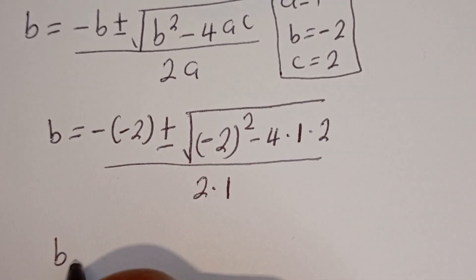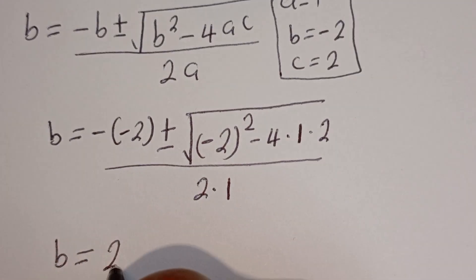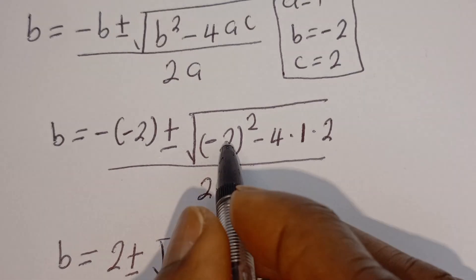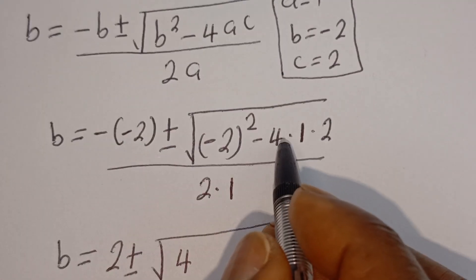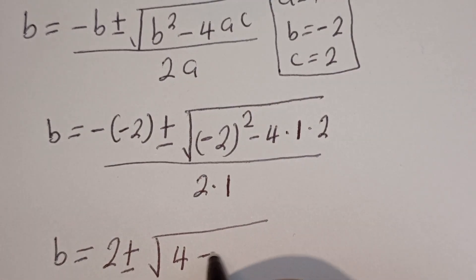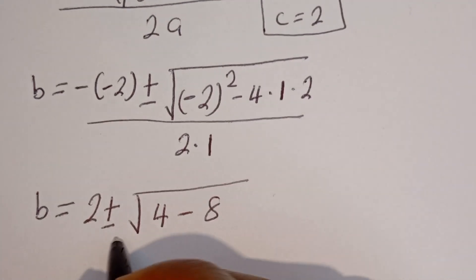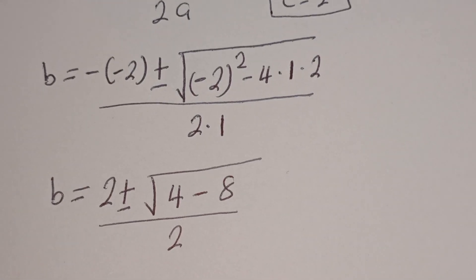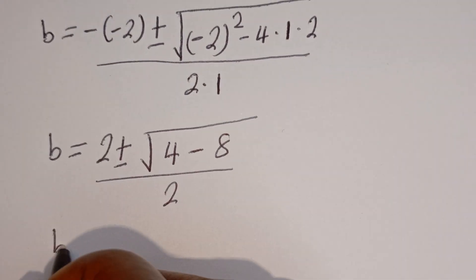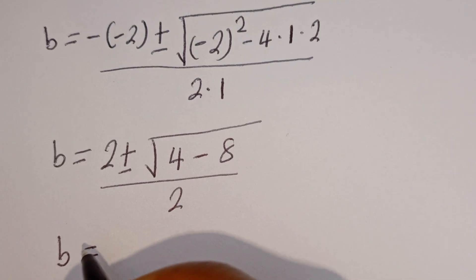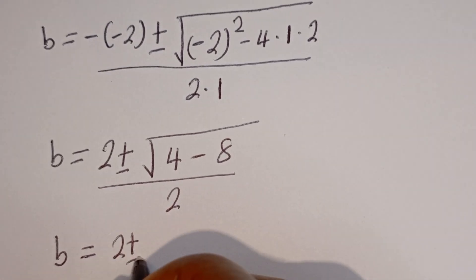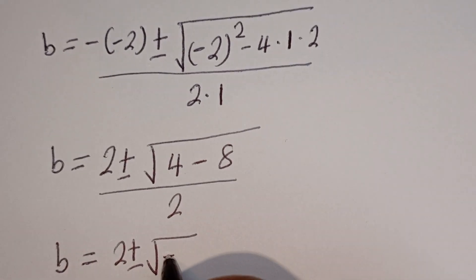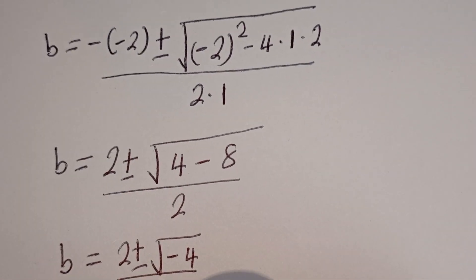Then we have B equal to minus bracket minus 2, plus or minus the square root of minus 2 squared minus 4 multiplied by 1 multiplied by 2, divided by 2 multiplied by 1. So B equals 2 plus or minus the square root of 4 minus 8, which is minus 4, divided by 2.